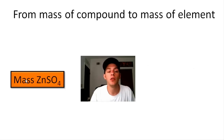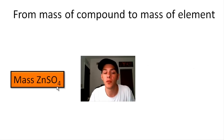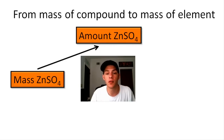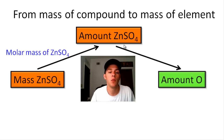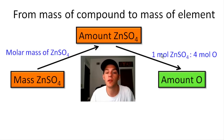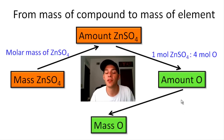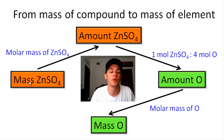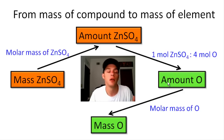Using zinc sulfate as an example: start with the mass of zinc sulfate, convert to moles of zinc sulfate using its molar mass, then use the molar ratio from the chemical formula to get moles of oxygen, and finally convert to mass of oxygen using the molar mass of oxygen. This way, we can convert from the mass of a compound to the mass of an element — or vice versa — without calculating mass percent composition.